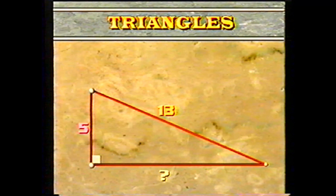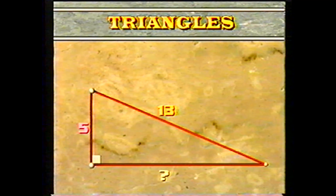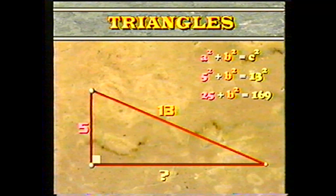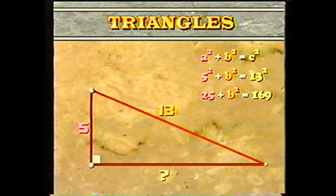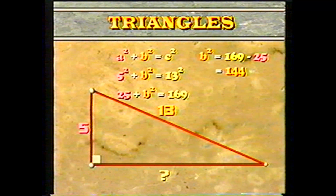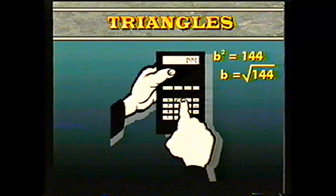Here's another example. Given a right triangle whose hypotenuse is 13 and one leg is 5, how long is the other leg? A squared plus B squared equals C squared. Substituting, 5 squared plus B squared equals 13 squared. 25 plus B squared equals 169, so B squared equals 169 minus 25, which equals 144. Then B equals the square root of 144. With a calculator, key in 144 and then the square root symbol to get the answer of 12.